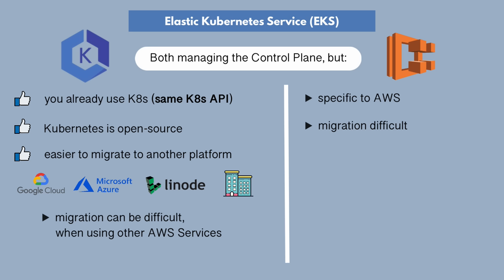On the ECS side, a more suitable use case for ECS is if you have less complex containerized applications that don't need a full-fledged Kubernetes cluster. In that case, you can deploy on ECS cluster and you don't pay for the ECS control plane compared to EKS cluster control plane. But generally, EKS is a much better choice for managing and orchestrating your cluster on AWS infrastructure.